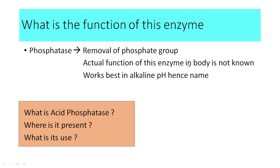Now, when alkaline phosphatase works best at alkaline pH, a phosphatase working at acid pH should be known as acid phosphatase — and yes, the body does have an acid phosphatase. My question to you all is: what is acid phosphatase, where is it present, and what is its use? You can write this as a comment to this video.